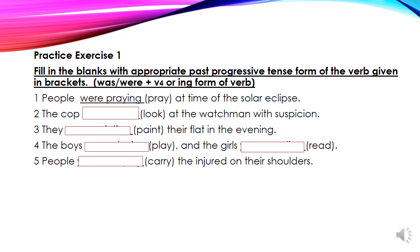Number 2: the cop dash look at the watchman with suspicion. Cop means police officer — singular — so we use was. ING form of look is looking. Answer: the cop was looking at the watchman with suspicion. Suspicion means doubt. Number 3: they dash paint their flat in the evening. They is plural, so we use were. ING form of paint is painting. Answer: they were painting their flat in the evening.